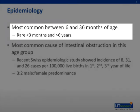Intussusception most commonly occurs in children between 6 and 36 months of age and is the most common cause of intestinal obstruction in this age group. It is rare before 3 months and after 6 years of age.